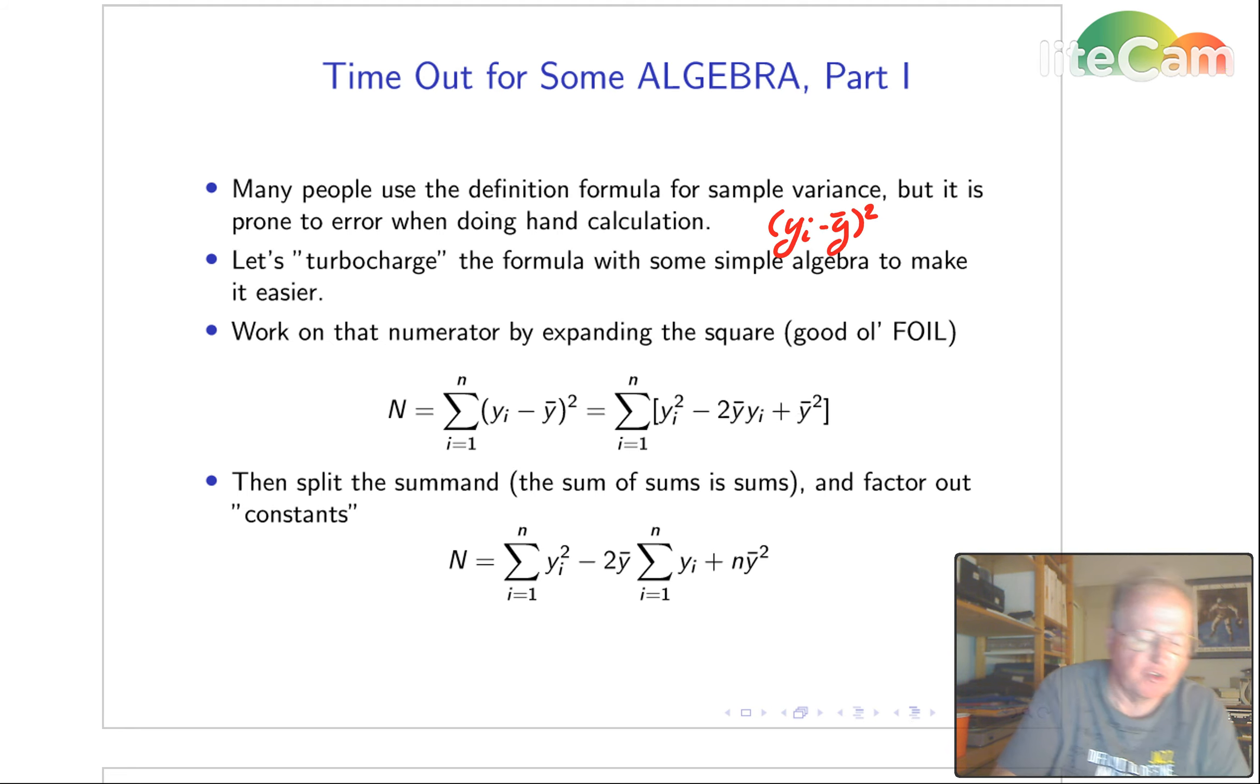We'll take that numerator with the deviations and we'll expand it using FOIL. Then we'll take these three parts and split them into three separate sums and then factor out the constants.